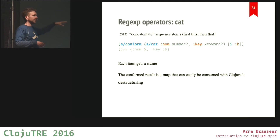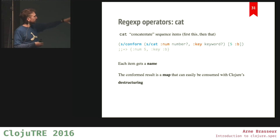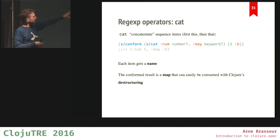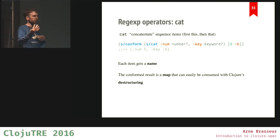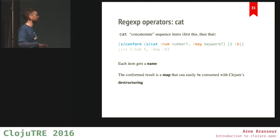s/cat stands for concatenate — it means first this, then that. You put a sequence of things after each other. Here I'm saying first a number, then a keyword, and that vector conforms. I give those elements names — 'num' and 'key' — which are then used when you conform the value to get a new map. That resulting map is really amenable to destructuring, making it easier to process.